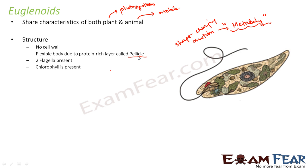Two flagella are present, and chlorophyll is present. Interestingly, it is said that chlorophyll was not originally present in Euglenoids from the very beginning. They basically acquired chloroplasts by ingesting green algae cells. By taking in green algae, they acquired chloroplasts — because green algae contained chloroplasts, which contain chlorophyll — and so Euglenoids also contain chlorophyll.